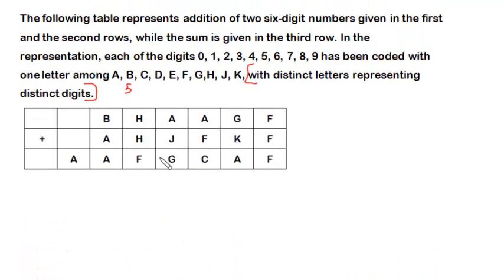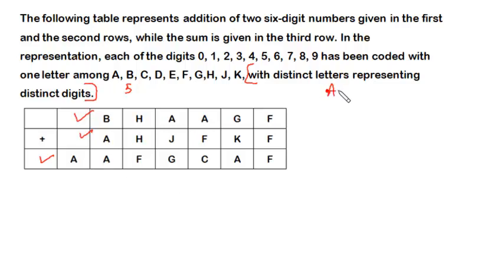The first and second numbers are six-digit numbers, but the sum is a seven-digit number. A seven-digit or six-digit number cannot start with zero, otherwise it would no longer be a seven-digit or six-digit number respectively. So straight away we can say that A cannot be equal to zero, and with some observation we can say that the value of A has to be one.